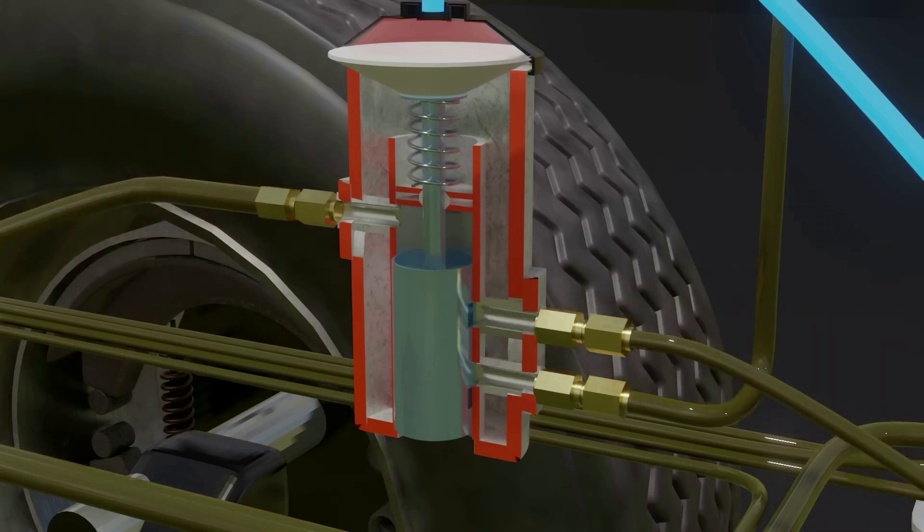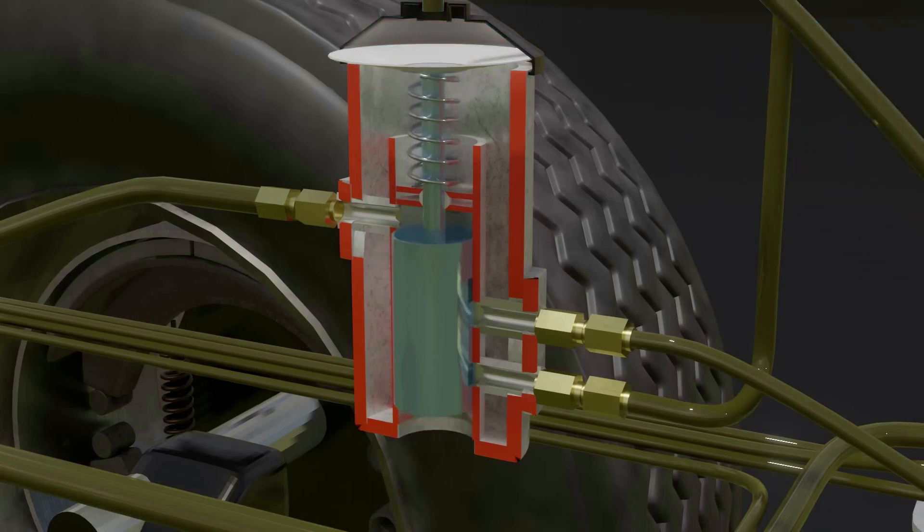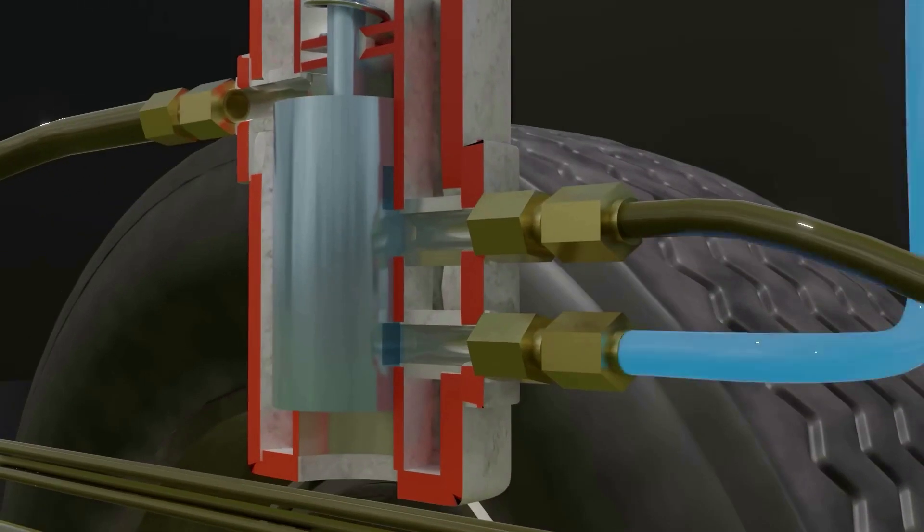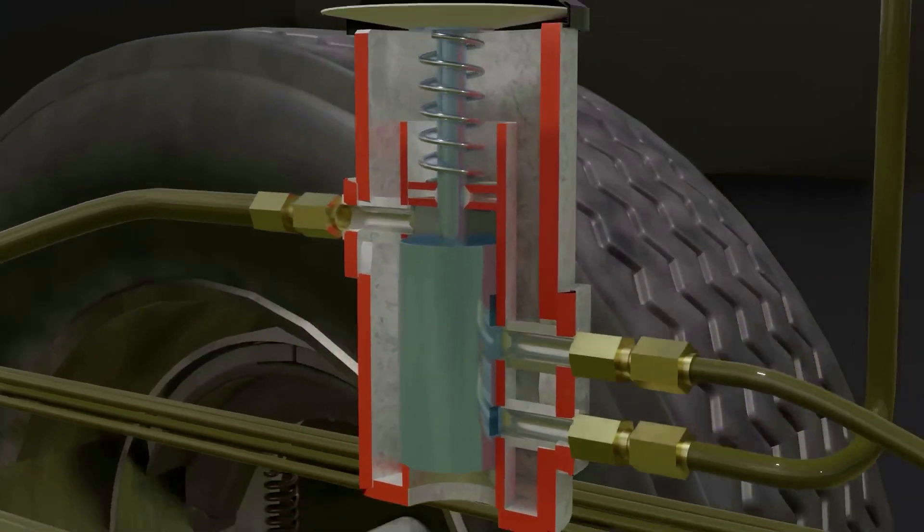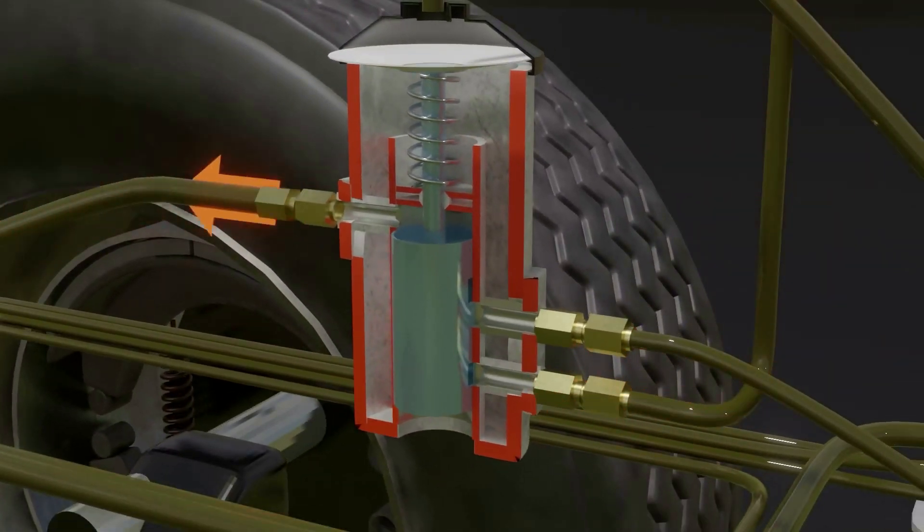But whenever the pressure drops below 100 psi, the plunger will slowly move back up as the spring pushes it. This will reopen the input channel from the outside, and the pressure can start rising again.